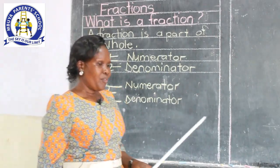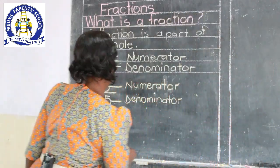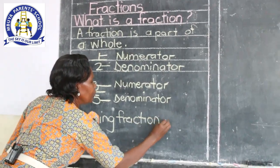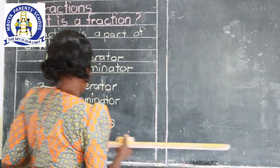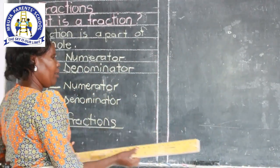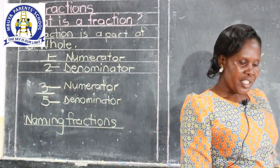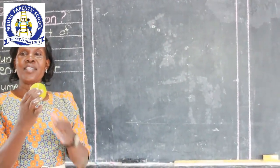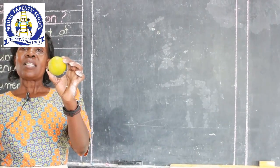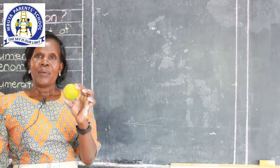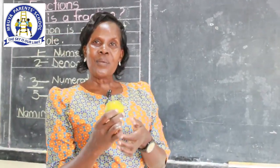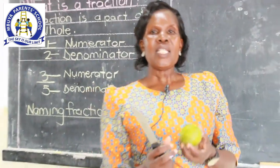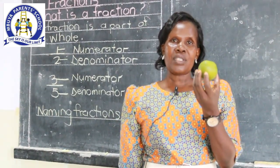Now we have learned that the top number of a fraction is the numerator and the bottom number is the denominator. Let's see how we can name these fractions. Before we name them, let's see how we can get some fractions by cutting. We said a fraction is a part of a whole. When you look at this orange, this is a fruit — it is one, so we call it a whole. After we have finished cutting it into parts, then it becomes a fraction. We are going to cut this orange into two equal parts and see which one is the numerator and which is the denominator.